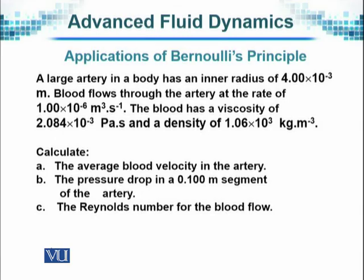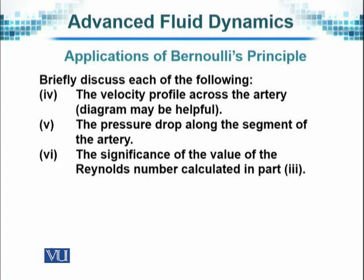All these things depict and reflect the blood flow mechanism and help doctors or whoever is looking at the problem to understand the situation properly. The second part of this question wants us to briefly discuss each of the following: the velocity profile across the artery — a diagram will be helpful — the pressure drop along the segment of the artery, and the significance of the value of the Reynolds number. This is an extension of the first three parts, where we calculate and then discuss their significance.